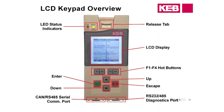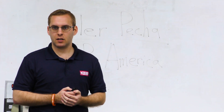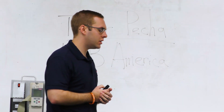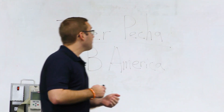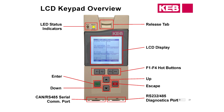Moving on to the LCD keypad — we've increased the size of the screen and added a few extra buttons as well as some diagnostic ports, all of which help with troubleshooting and make setting up the drive much easier. X6D is the diagnostic port for plugging in your cable if you have the inverter programming software Comdivis 6. X6C is the CAN or RS-485 serial port for connecting to your controller for serial speed control. We also added F1 through F4 hotkeys that provide advanced menu options and additional functionality.